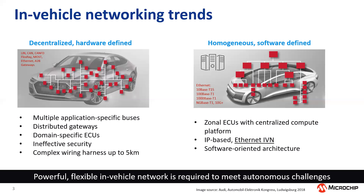Going forward we need a much more powerful and flexible in-vehicle network to take on these challenges and the needs for autonomous driving. Here ECUs are no longer domain-based but zonal, and we have this centralized compute platform. The vehicle is IP-based, running over a physical layer of Ethernet, connecting device to cloud, and we move to a more software or service-oriented architecture.